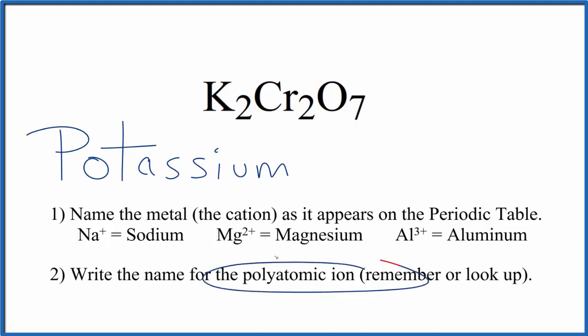Next, we'll write the name for the polyatomic ion. So you've either memorized that Cr2O7 is the dichromate ion, or if you're allowed, you look it up on a table of polyatomic ions. So the name for K2Cr2O7 is potassium dichromate.